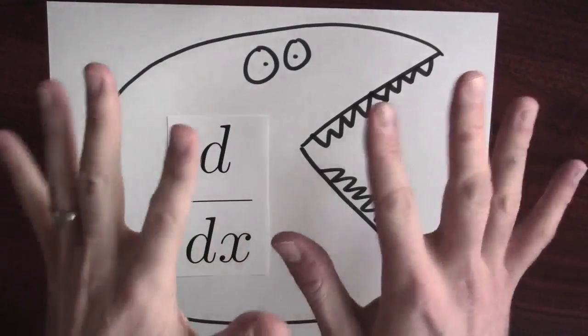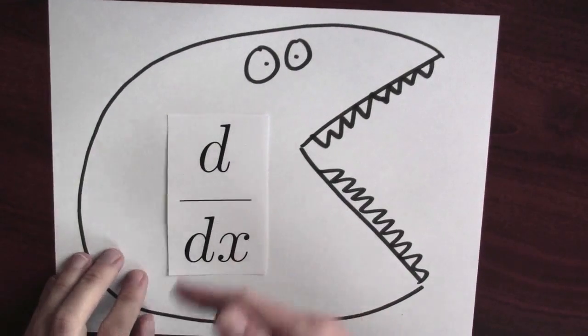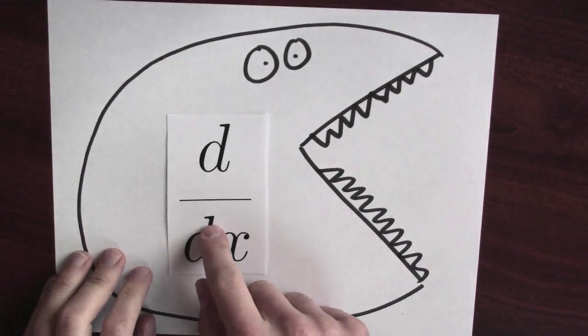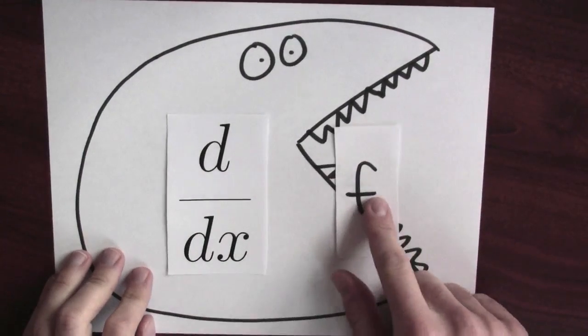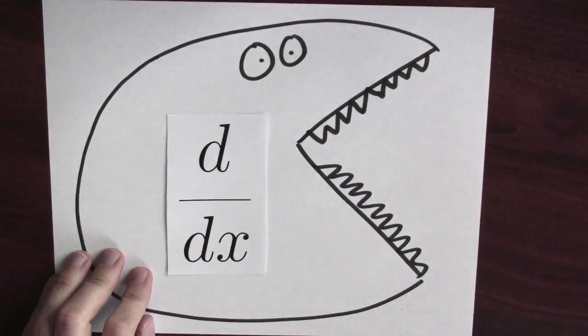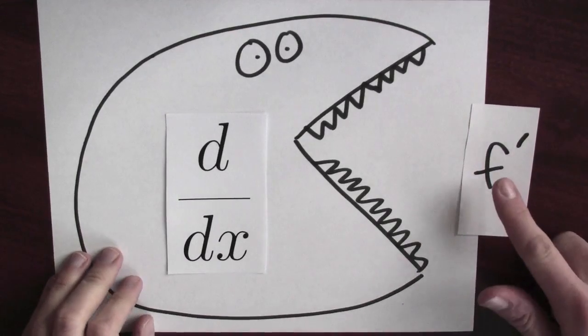But the food chain keeps going. The derivative is an operator. And what that means is that it's like a function for functions. The derivative eats a function and after it's done with it, it spits out a new function, the derivative.